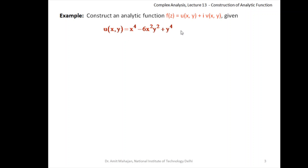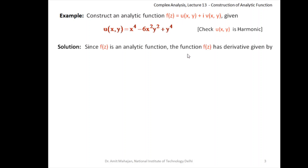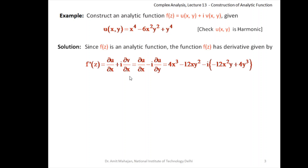Before you construct f(z) from u, your first step should be to check whether this function is harmonic or not. Check: u is harmonic — I am leaving this part to you to verify, but this function is harmonic. Since the function is analytic, the derivative exists and can be written as u_x + i·v_x. Because u is given, convert v_x into −u_y. So: u_x = 4x³ − 12xy², and u_y = −12x²y + 4y³. The derivative is u_x − i·u_y.